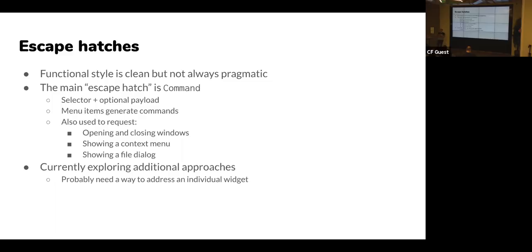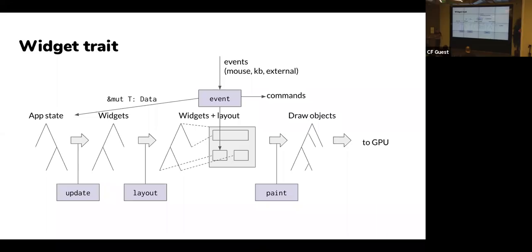We're looking at ways to make this richer — we probably need a way to address an individual widget. Right now we use the selector so widgets know whether they can respond to it or not, but we might want to deliver something to a specific widget. We haven't done that yet. Moving on: the widget trait itself encapsulates a lot of different behavior beyond just app state to widget. There's event processing — mouse clicks, keyboard events. There's the update phase from app state to widgets, the layout phase computing geometry, and the paint phase rendering appearance on screen.